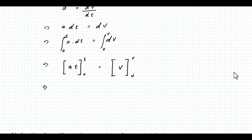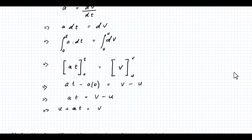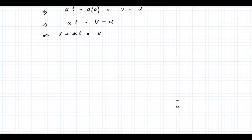Putting in the limits: At minus A times 0 equals V minus U, so At equals V minus U, or V equals U plus At, which you may recognize. So we have V equals U plus At.